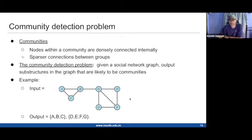They're like a group of people who are very closely knit. Given such a social network graph, you want to partition the vertex set into social communities. It looks like A, B, and C form one community, and D, E, G, and F form another community. So the output of the particular algorithm should be A, B, C is one community and D, F, G is another community.